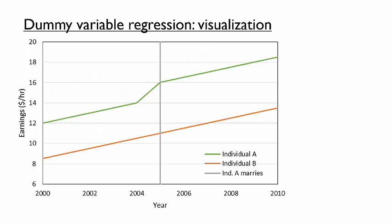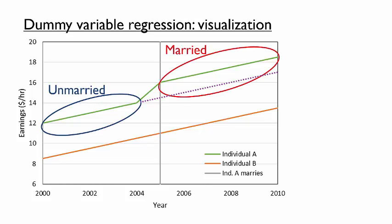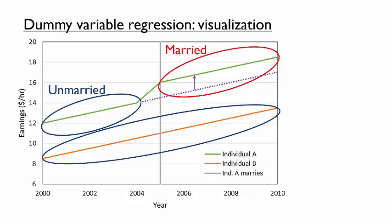Let's return to our example. An important point here is that controlling for individual dummy variables also means that we are holding individual constant — in other words, we should be looking at the relationship between marriage and earnings one individual at a time. If we extrapolate the earnings of individual A based on the time trend, we see that a one-unit increase in the married variable — that is, a change from unmarried to married — is associated with an additional increase in wages. That increase would be reflected in the married coefficient. Individual B does not have any within-individual change in marital status, so his observations do not affect the married coefficient.